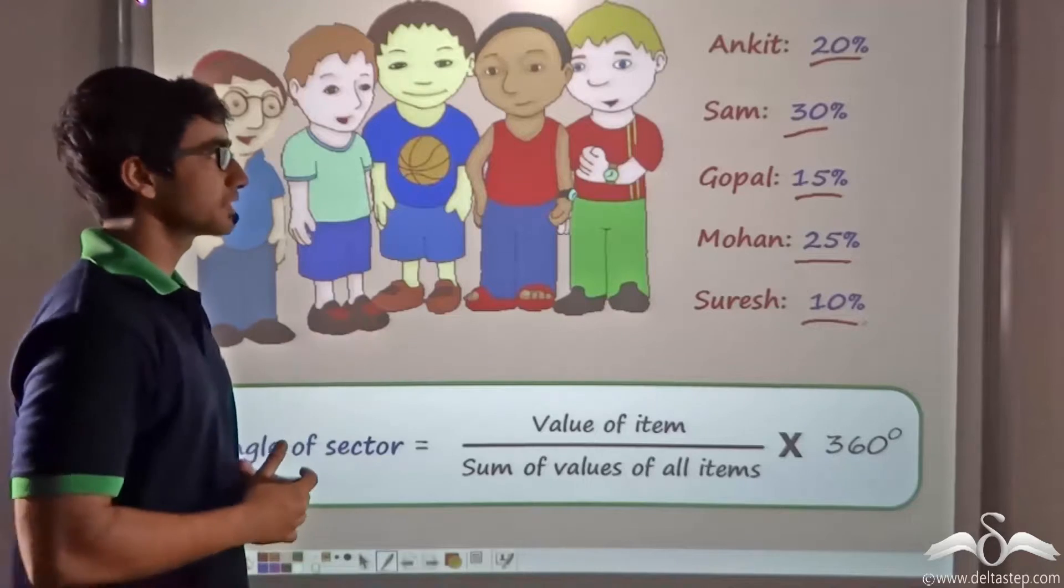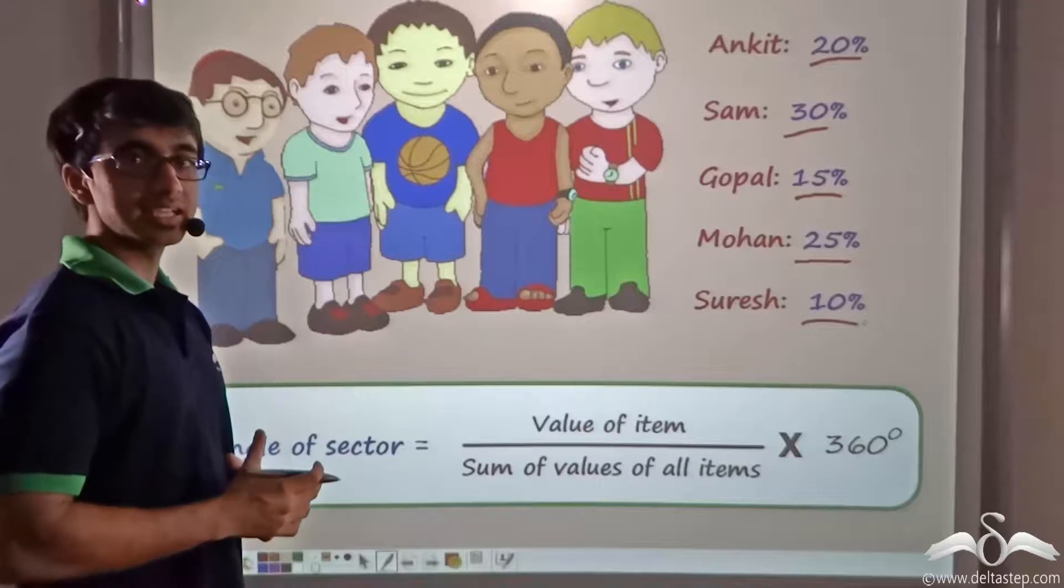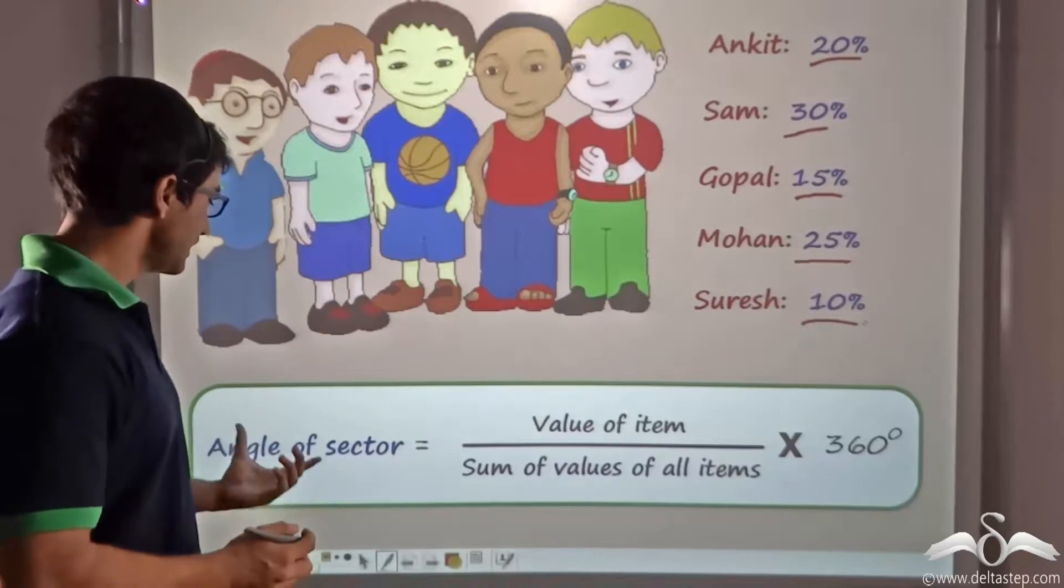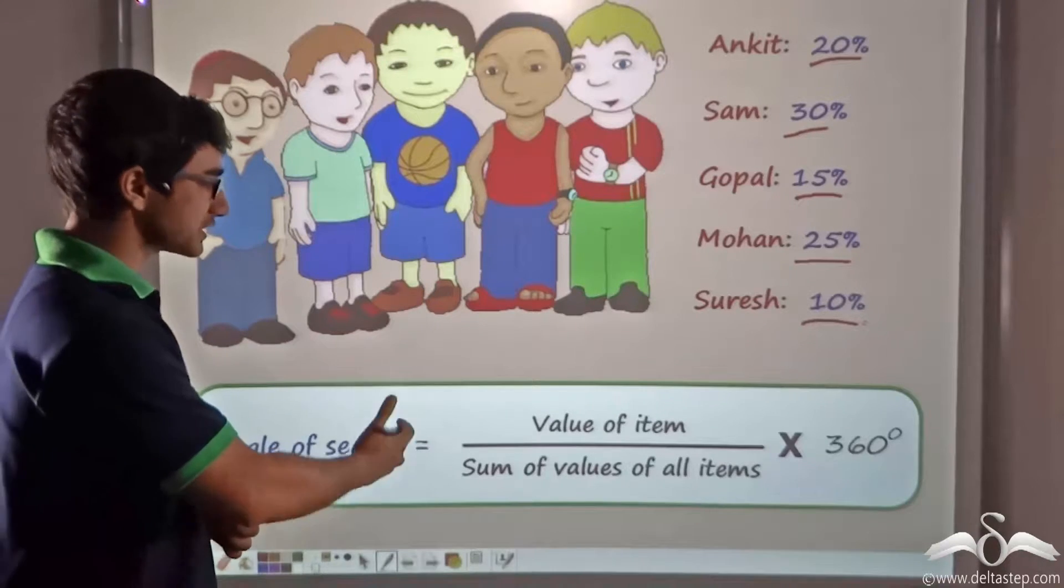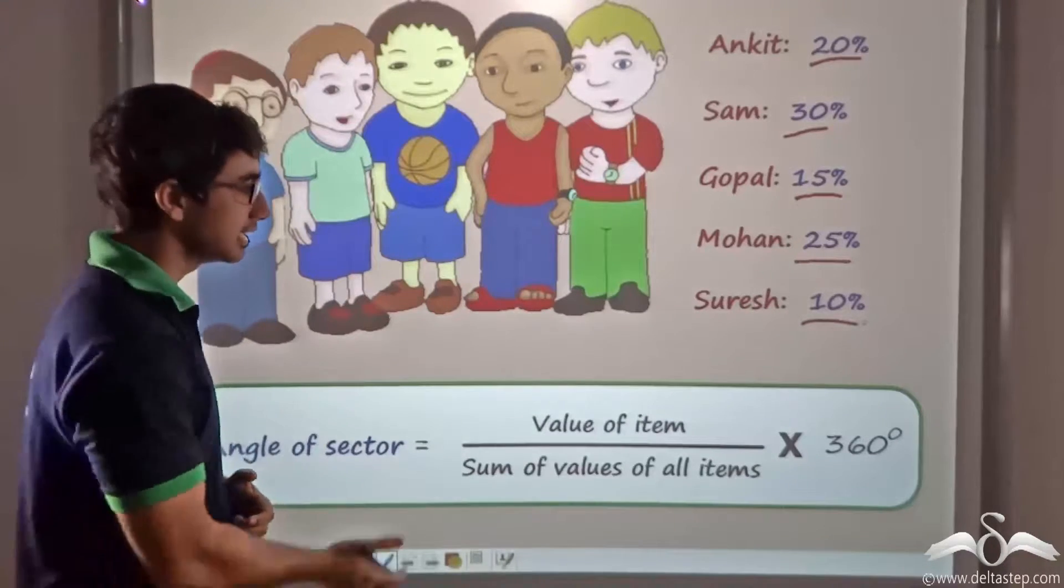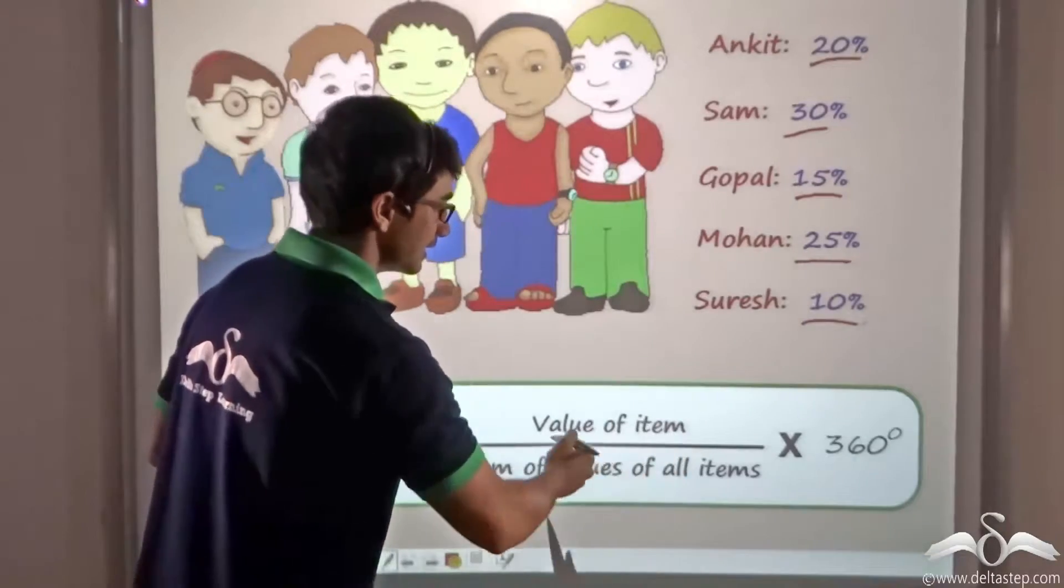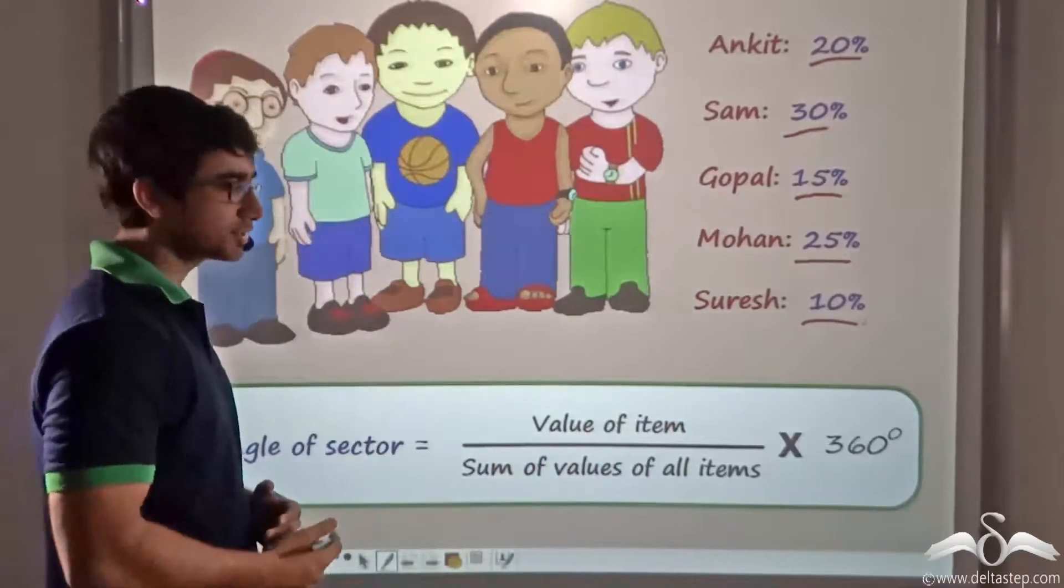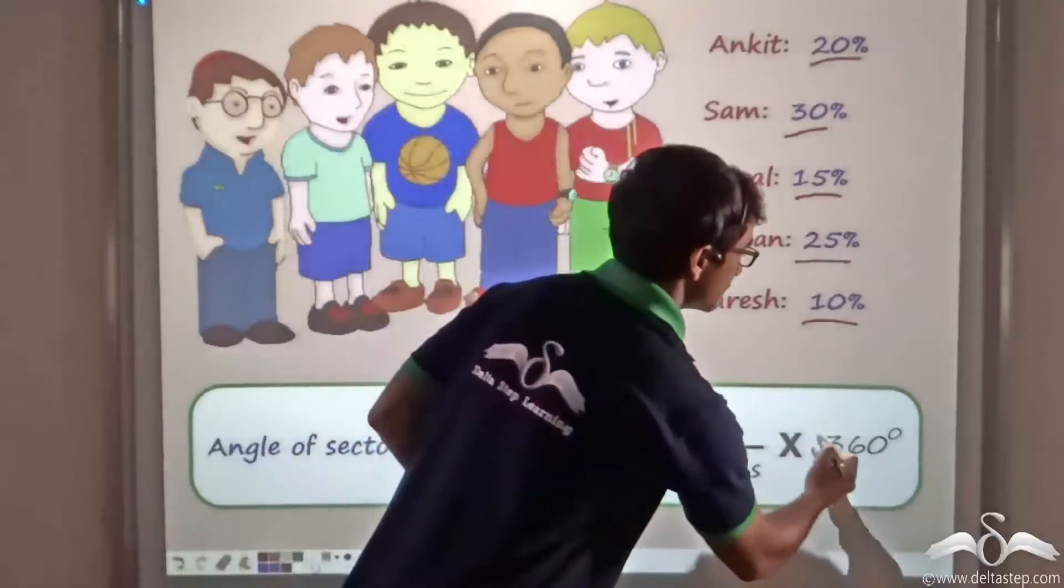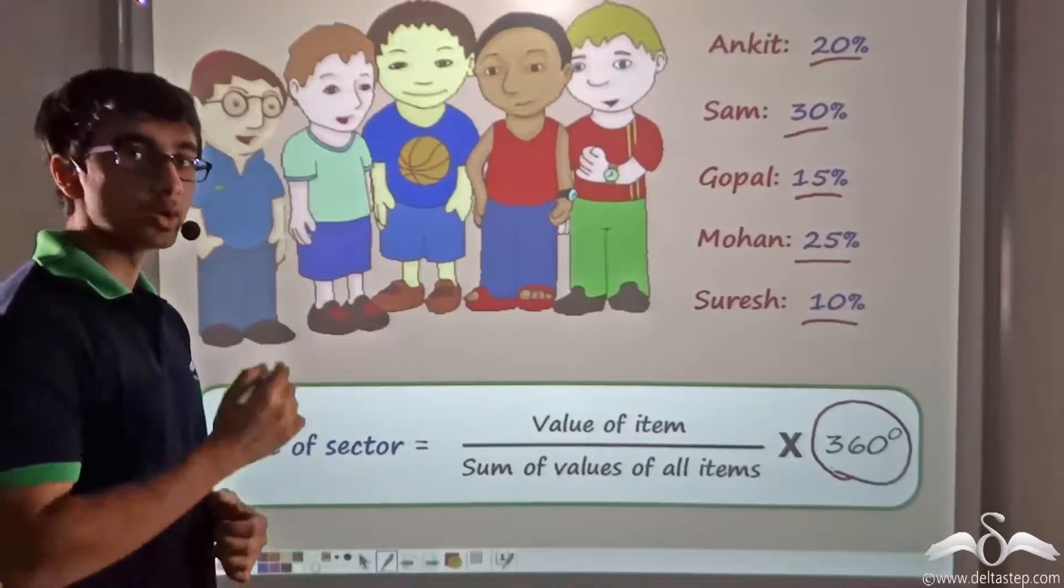In order to do so, we have to draw a pie chart. Since a pie chart is represented in the form of sectors of a circle, how can we find out the angle of a sector? The angle of a sector can be found out for a particular data item in the following manner: the value of the item divided by the sum of values of all items multiplied by 360, that is the total angle of the circle. Let us find out how we can do so.